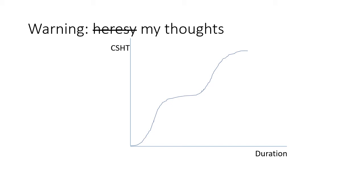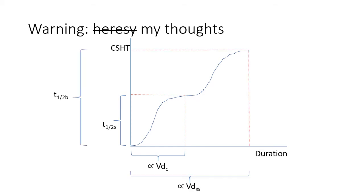The context-sensitive halftime curve of every drug is some variation of this shape. This graph invokes a two-compartment model of sorts. The first plateau represents the distribution half-life, and the length of time it takes to get there on the x-axis is proportional to the central volume of distribution. The final plateau represents the terminal elimination half-life of the drug, and the length of time it takes to get there is proportional to the volume of distribution at steady state.